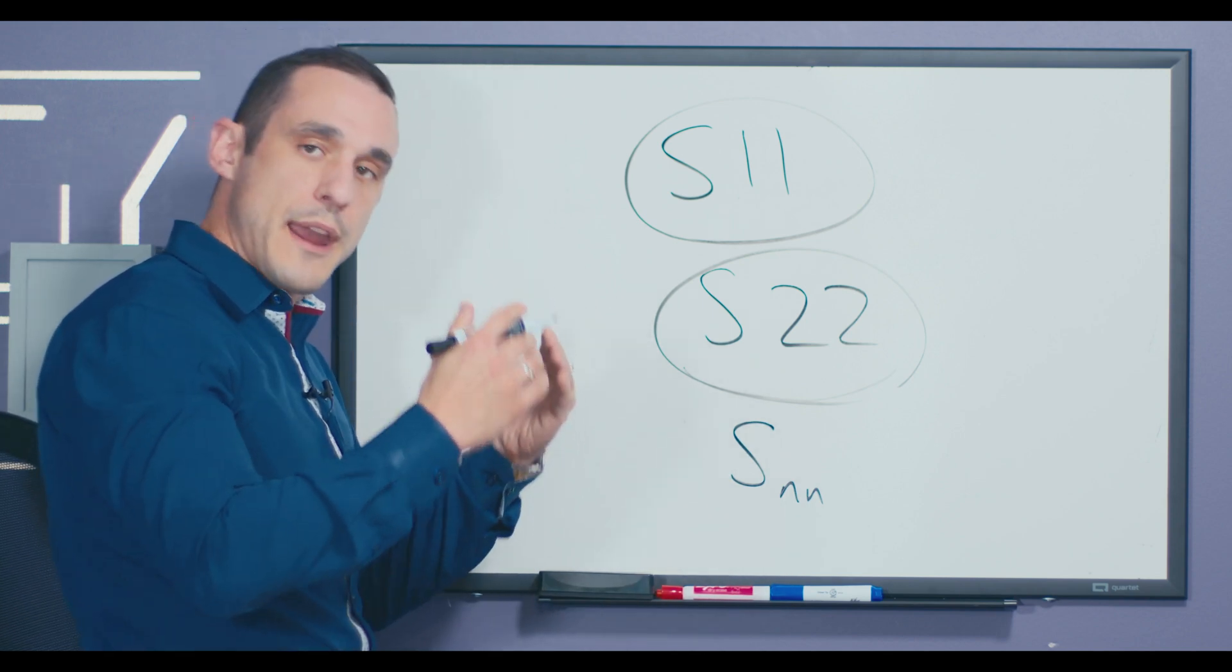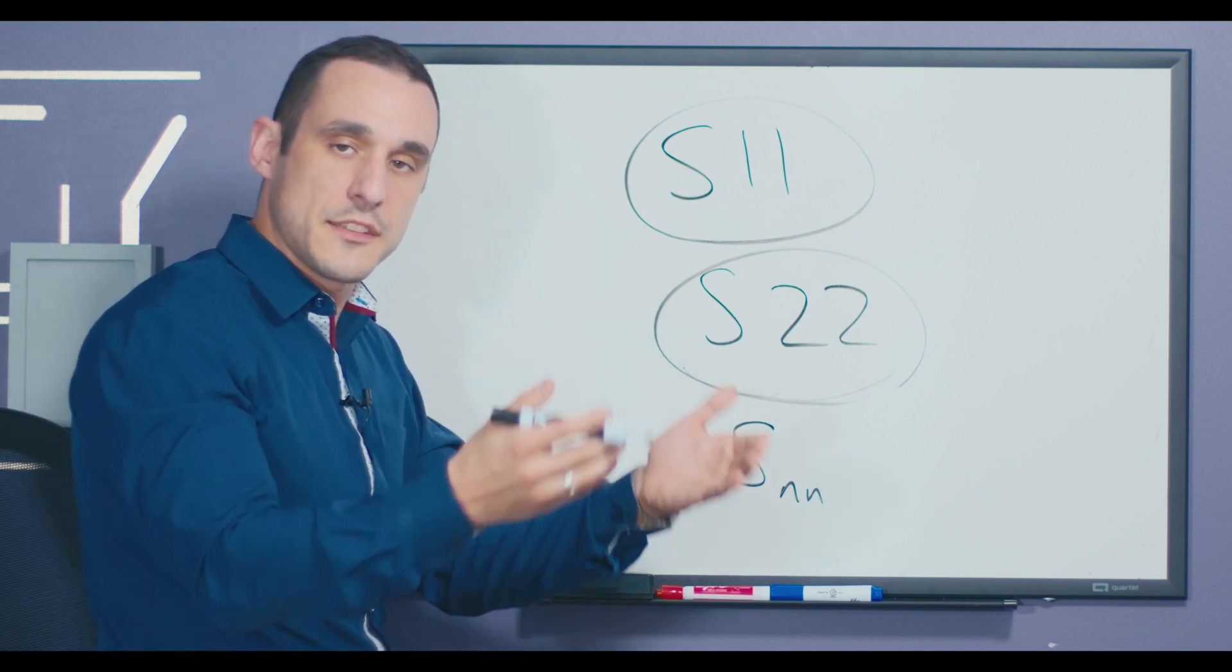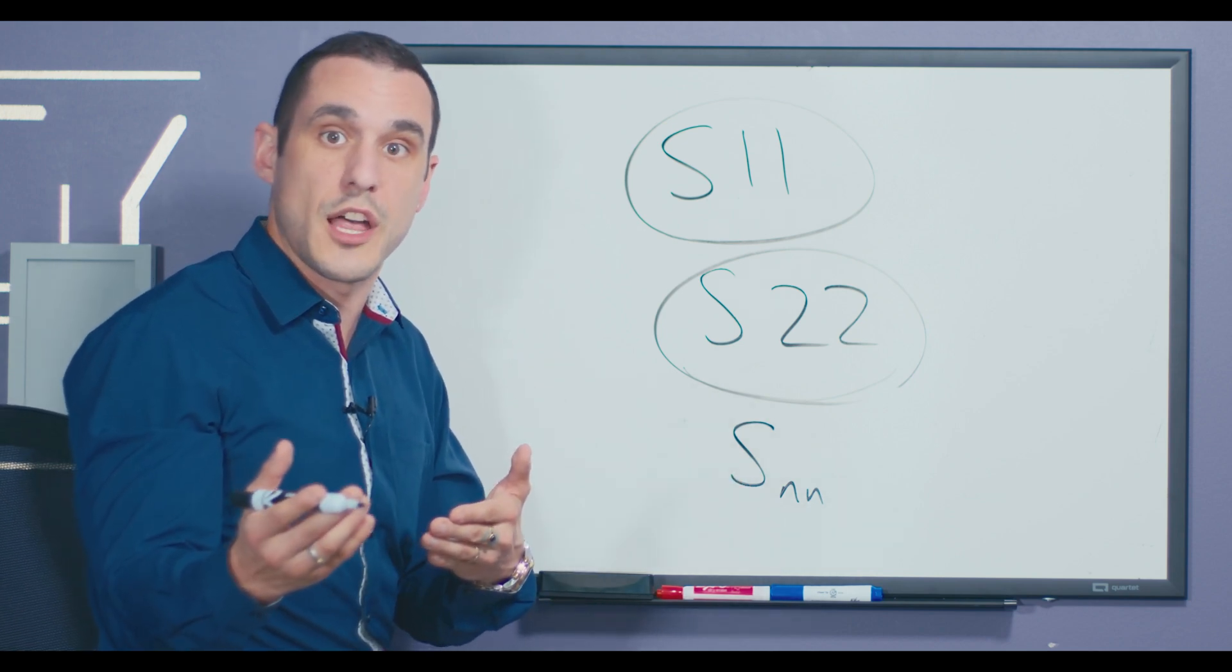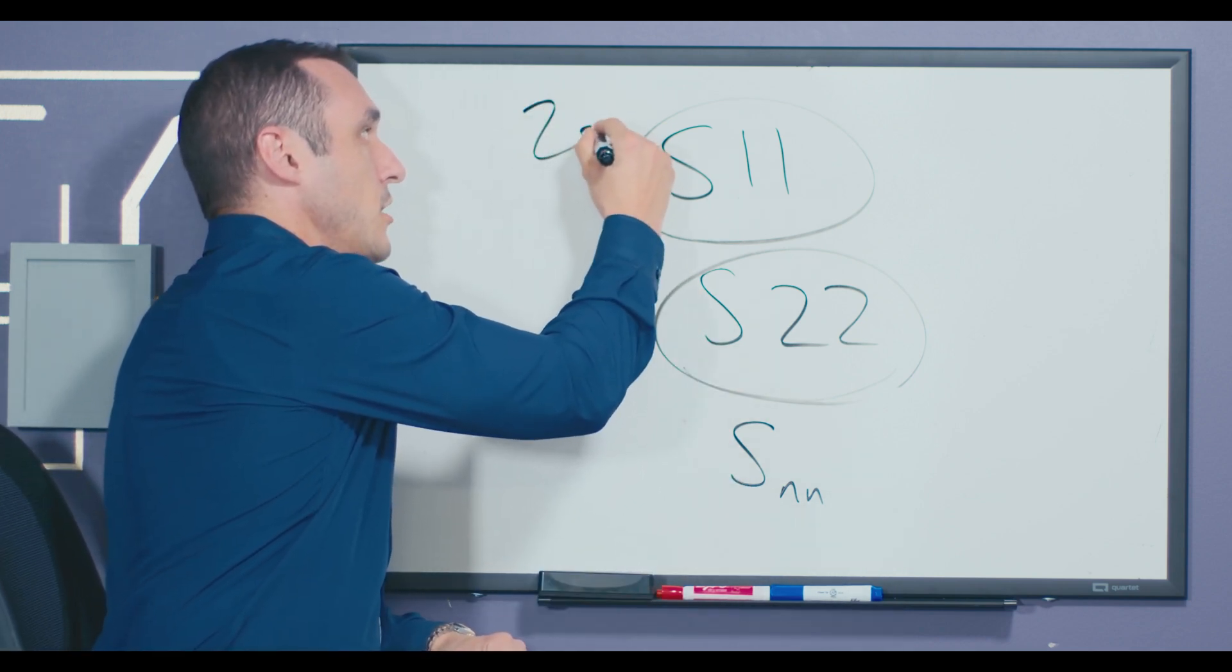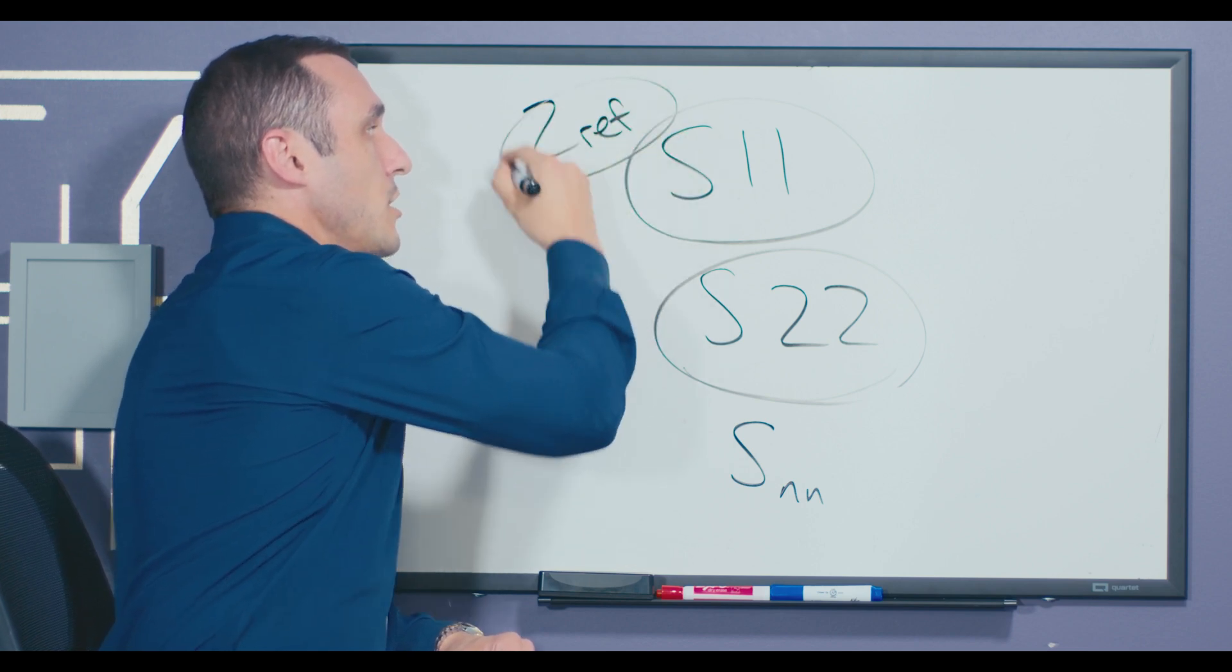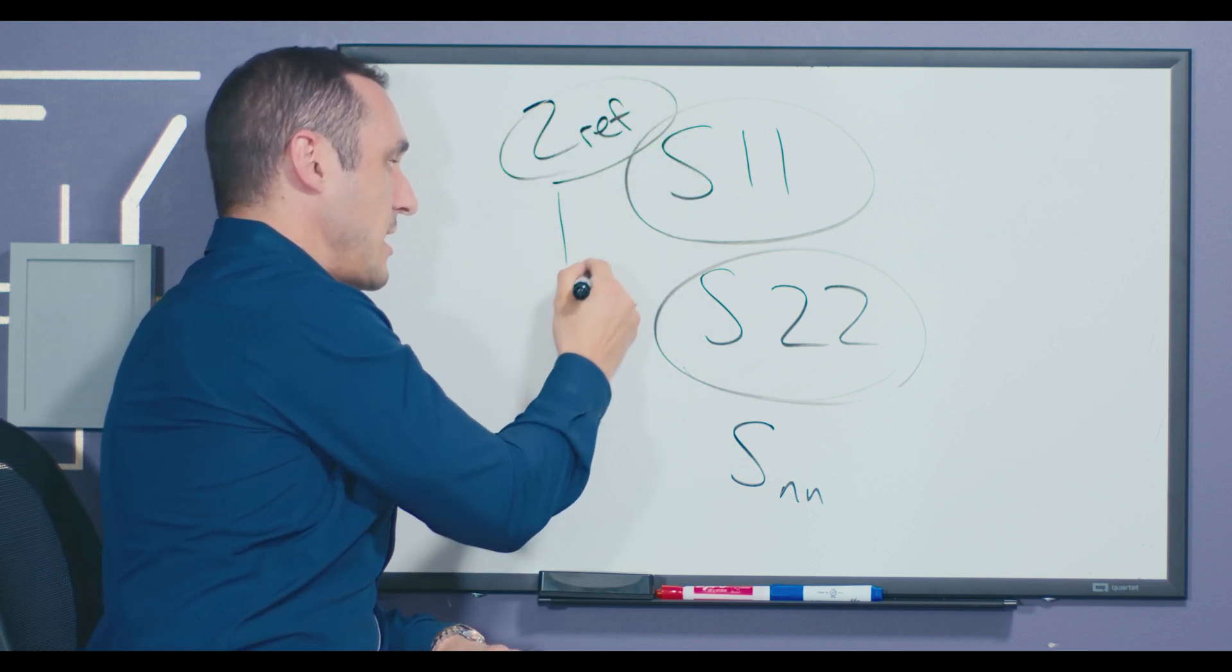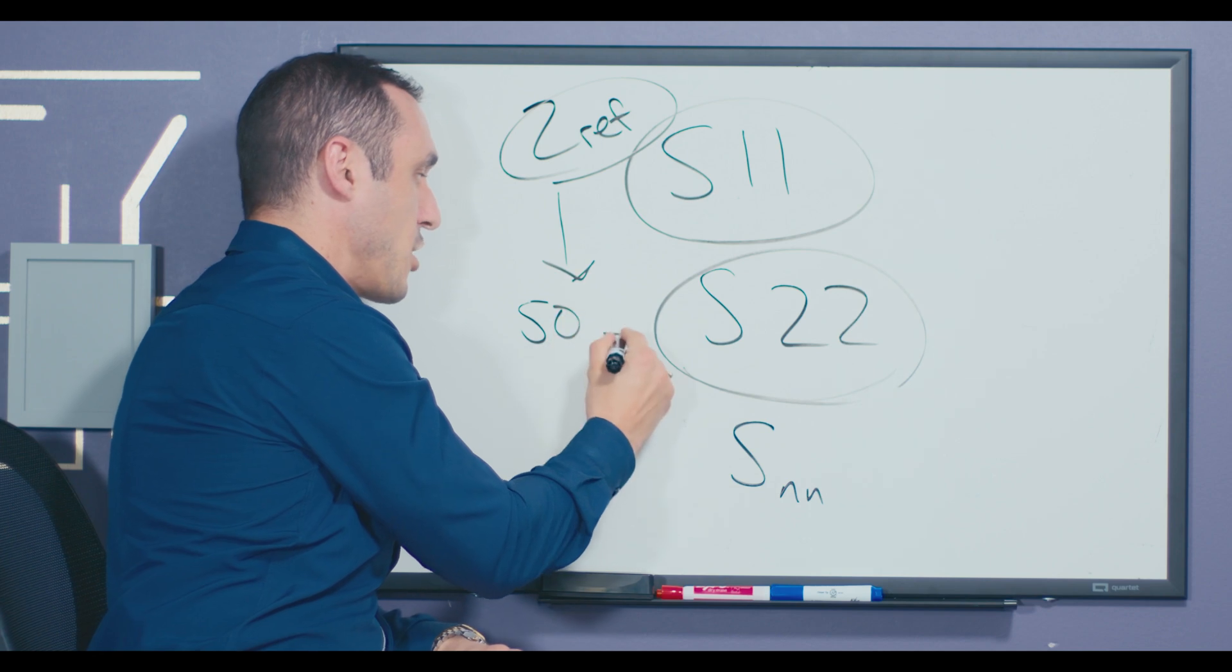And what you're doing is you're comparing the impedance of the device under test, in this case a transmission line, with some reference impedance that we'll call Z-Ref. So this Z-Ref is usually set to, of course, 50 ohms.